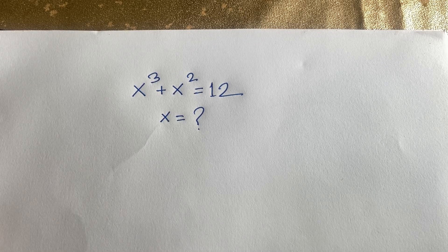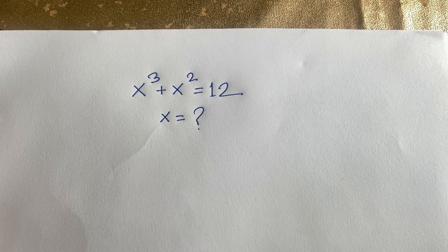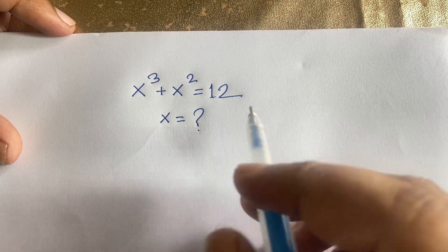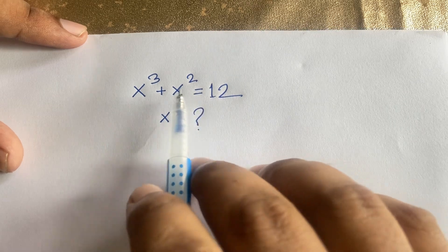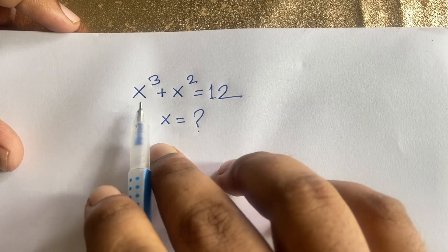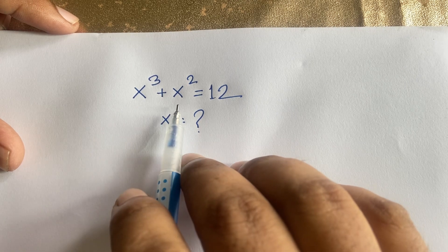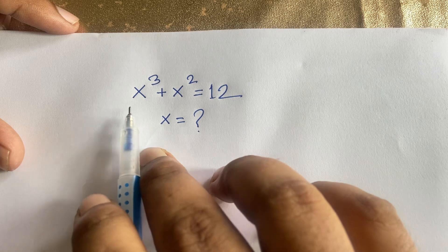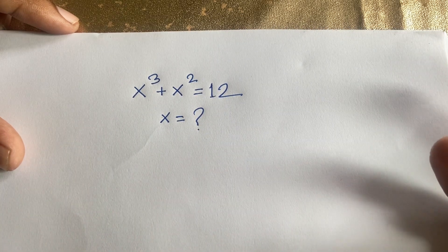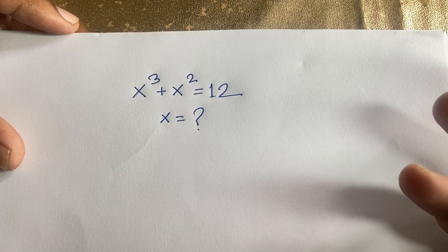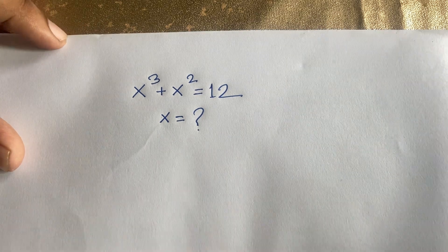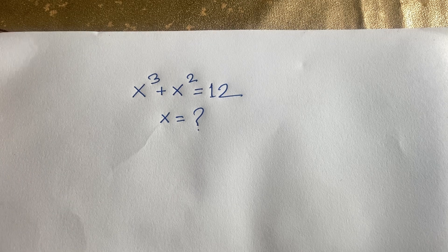Hello everyone. In this video we are solving this cubic exponential equation: x to the power 3 plus x squared is equal to 12. We are finding three answers because the exponent is 3. If x equals 1, then 1 cubed plus 1 squared equals 2, which is not 12. If x equals 2, then 2 cubed is 8 and 2 squared is 4, and 8 plus 4 equals 12. So x equals 2 is one solution, but we'll also find the complex roots.